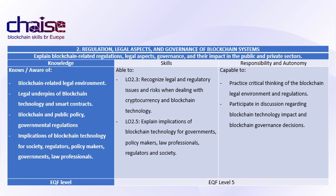Few skills, competencies, and knowledge have been defined for the Chase Project. By following this lecture from Module 2, you will be able to recognize legal and regulatory issues and risks when dealing with cryptocurrency and Blockchain technology. You can explain implications of Blockchain technology for governments, policymakers, law professionals, regulators, and society. You can practice critical thinking of the Blockchain legal environment and regulation, and participate in discussions regarding Blockchain technology impact and Blockchain governance decisions. All these skills are based on basic knowledge on Blockchain governance and regulation. You will know about Blockchain-related legal environment, legal underpinnings of Blockchain technology and smart contracts, Blockchain and public policy, governmental regulations, and implications of Blockchain technology for society, regulators, policymakers, and government law professionals.